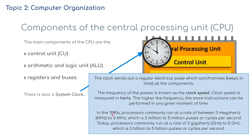In the mid-1980s, processors commonly ran at a rate of about 3 MHz to 5 MHz, which is 3 million to 5 million pulses or cycles per second. Today's technology — processors commonly run at a rate of 3 to 5 GHz, which is 3 billion to 5 billion pulses. And this is obviously growing by the year as well.